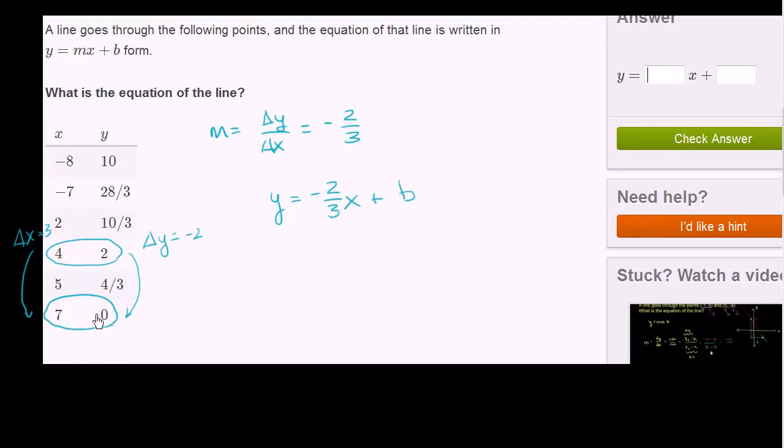But this isn't going to be really clean for any of these numbers right over here. If we had a 3 for x, or a 6 for x, or a 0 for x, then things would work out nicely. But they don't give us any of those. So let's just try this 7 and this 0.